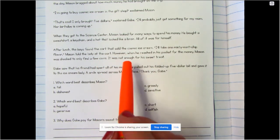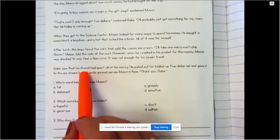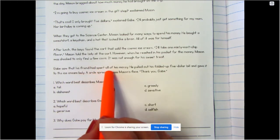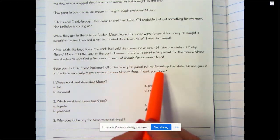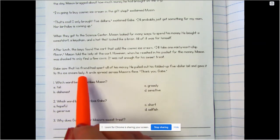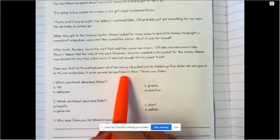However, when he reached in his pocket for the money, Mason was shocked to only find a few coins. It was not enough for his sweet treat. Gabe saw that his friend had spent all of his money. He pulled out his folded up five dollar bill and gave it to the ice cream lady. A smile spread across Mason's face. Thank you, Gabe.